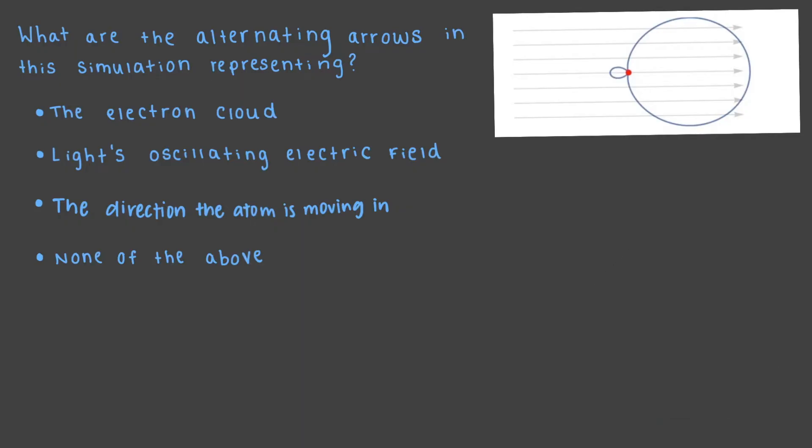The gray arrows moving back and forth periodically represent the alternating electric field of the light. These are the light oscillations. Notice that the frequency of the light's oscillations matches the frequency of the change in the electron wave. This is called absorption. The light transfers energy to the electron wave and changes it.